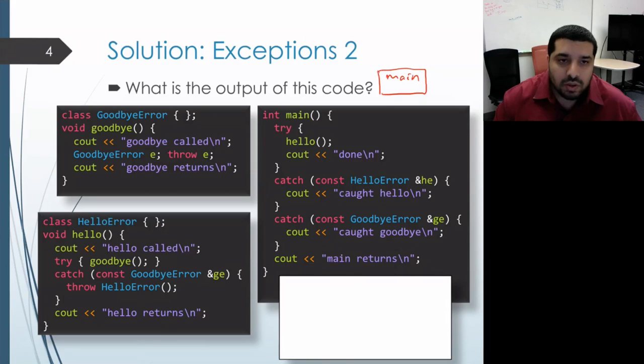And then it's going to execute the code inside the body of main. So it's going to enter the try block and make a call to the hello function, which creates an activation record for hello on our call stack.